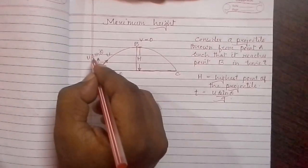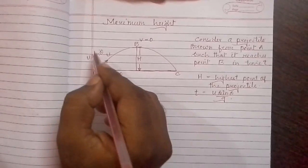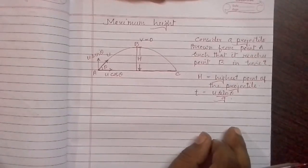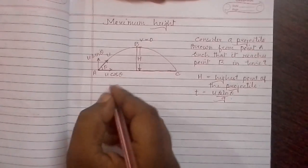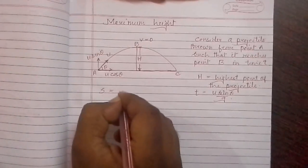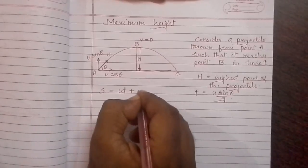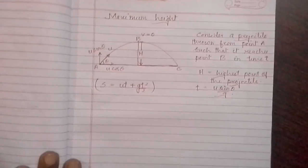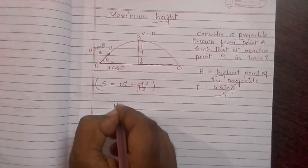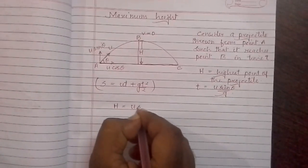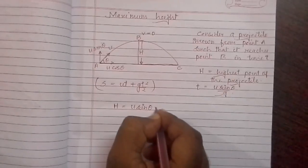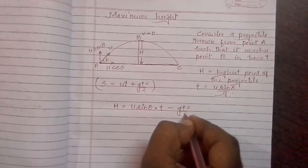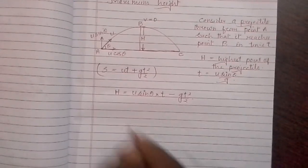Taking that into consideration and writing the expression for the equation of motion: s equals ut plus gt square by 2. We can write h equals u sin theta.